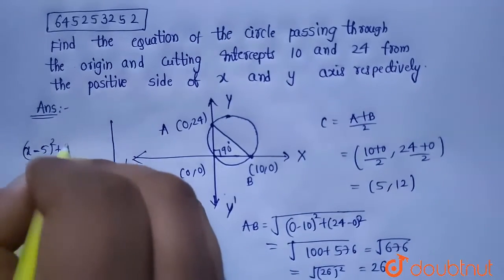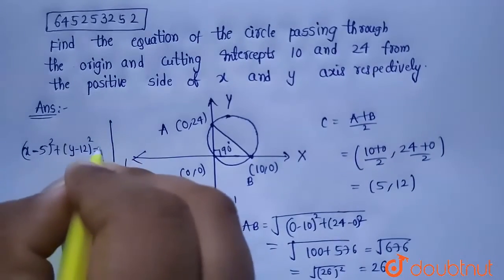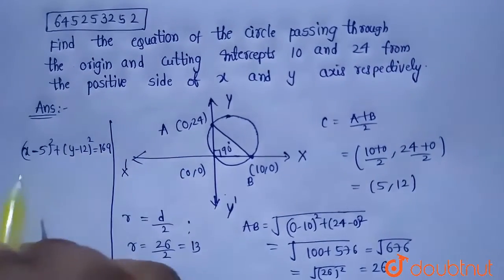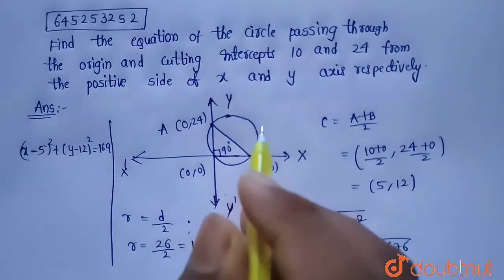That equals x minus 5 whole square plus y minus 12 whole square equals 13 square, that is 169. So x minus 5 whole square plus y minus 12 whole square equals 169 is the required equation of the circle.